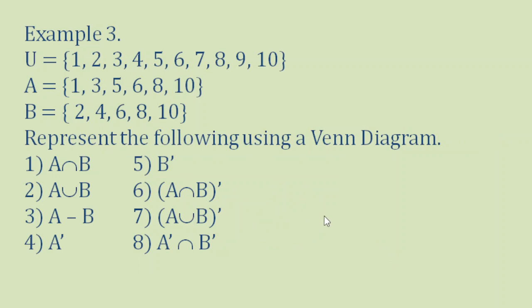Now let's have another example. The elements of U are 1, 2, 3, 4, 5, 6, 7, 8, 9, 10. The elements of A are 1, 3, 5, 6, 8, 10. The elements of B are 2, 4, 6, 8, 10. We are going to answer 8 questions.